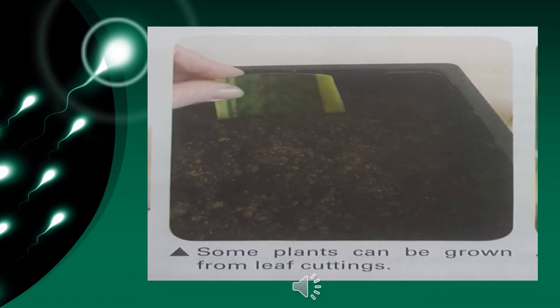Here is an example of some plants which can be grown by leaf cutting. Leaf cuttings are placed in a growth medium and provided proper growing conditions, then they will grow into a new plant.